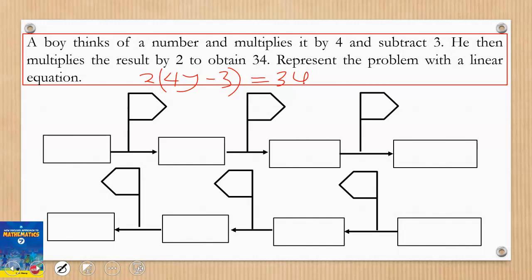First we have a number we don't know. The boy multiplied the number by 4, giving us 4y. He then subtracted 3, giving us 4y - 3. He multiplied everything by 2, giving us 2(4y - 3). So we're done with the left-hand side.